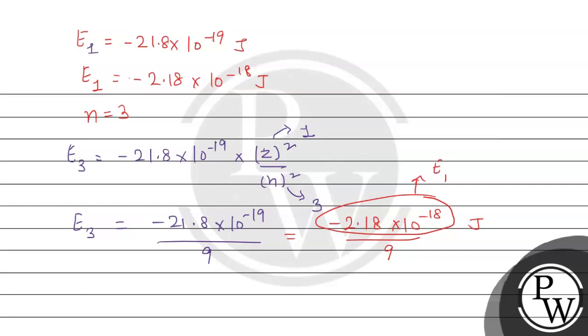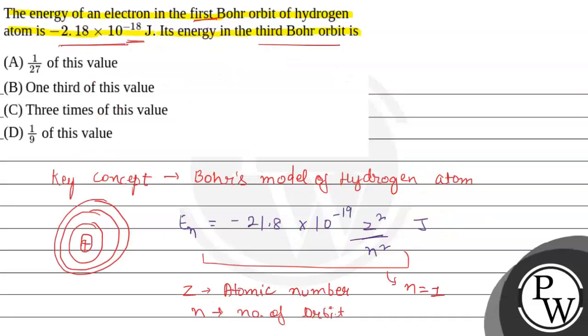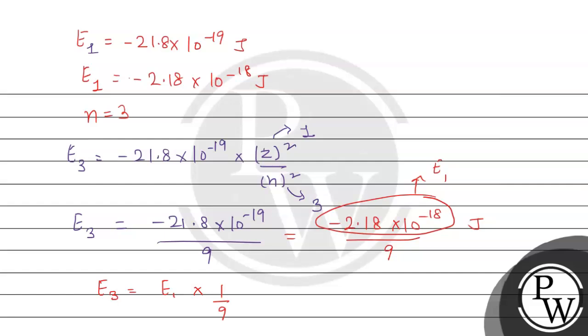...E1, the energy for the first orbit. So E3 = E1 × 1/9, which means the energy of the third orbit is one-ninth of this value.